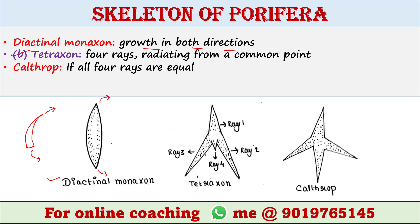Next type is tetraxon. This type of spicule is made up of four rays — ray 1, ray 2, ray 3, and ray 4 — all radiating from a common point. If all four rays are equal, the spicule is called calthrop.